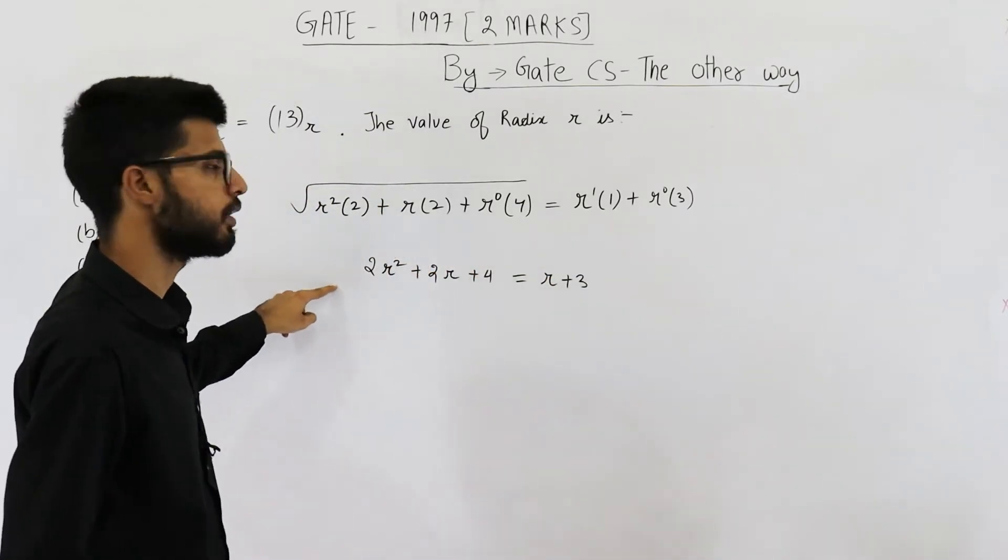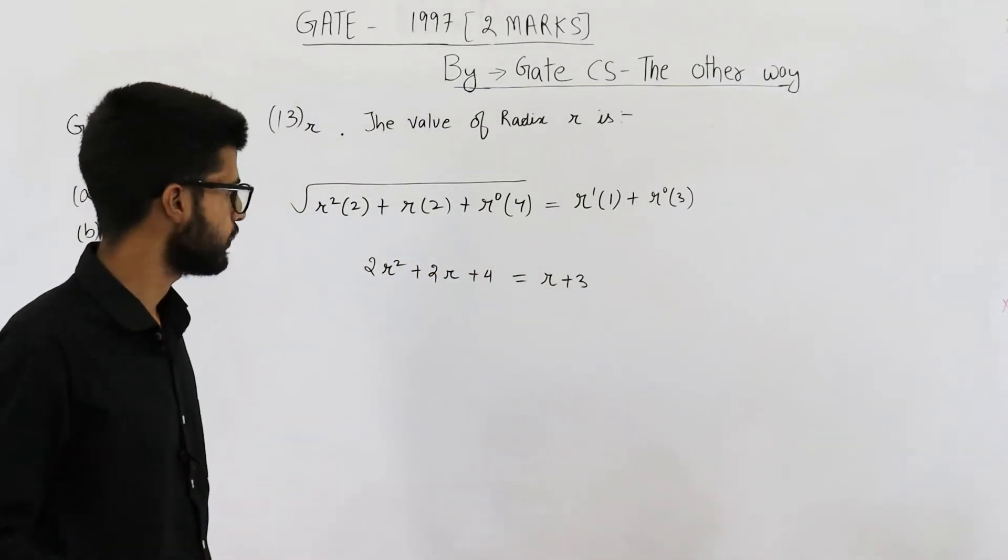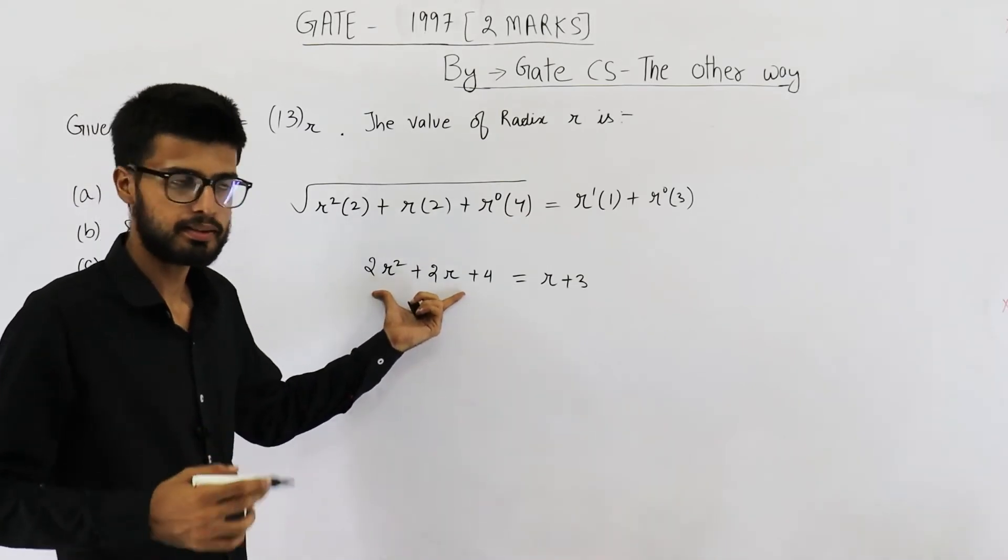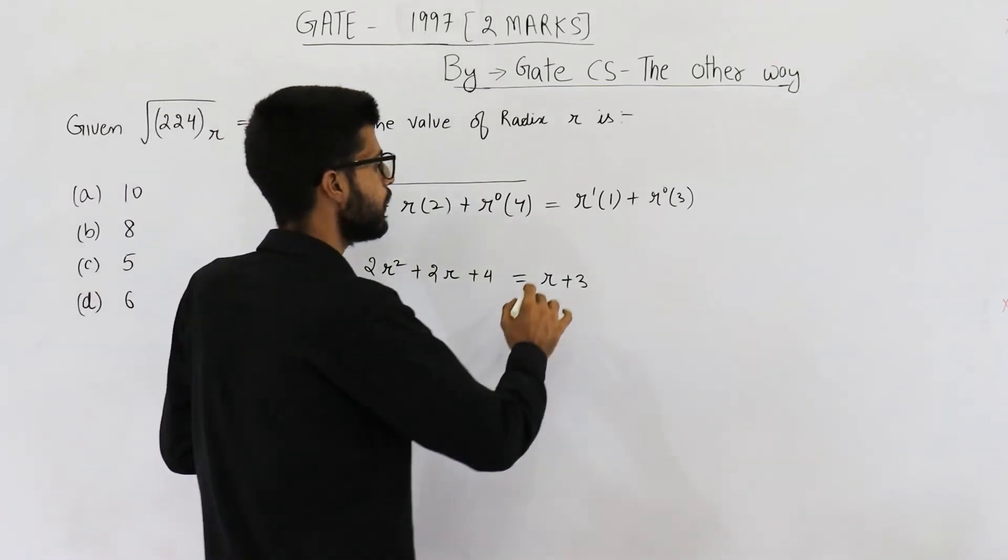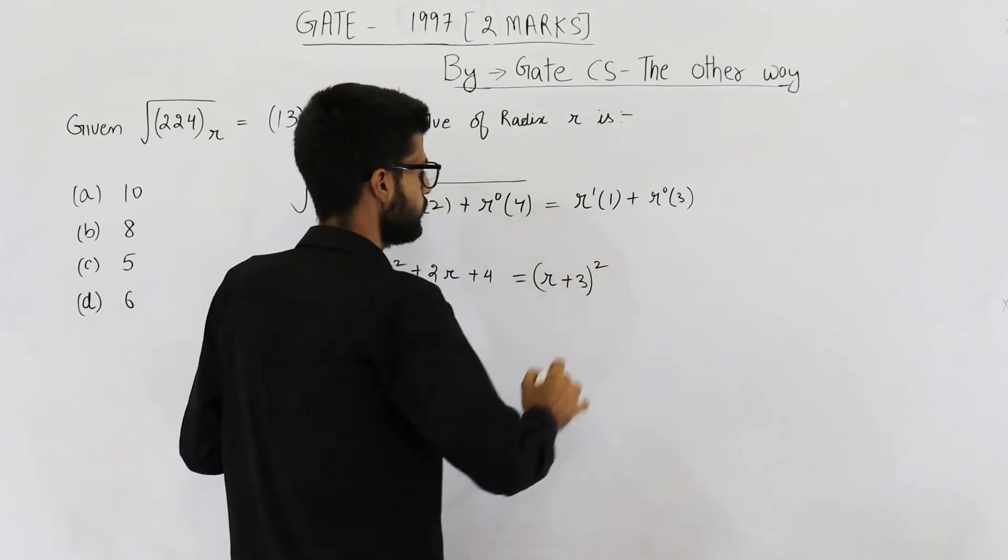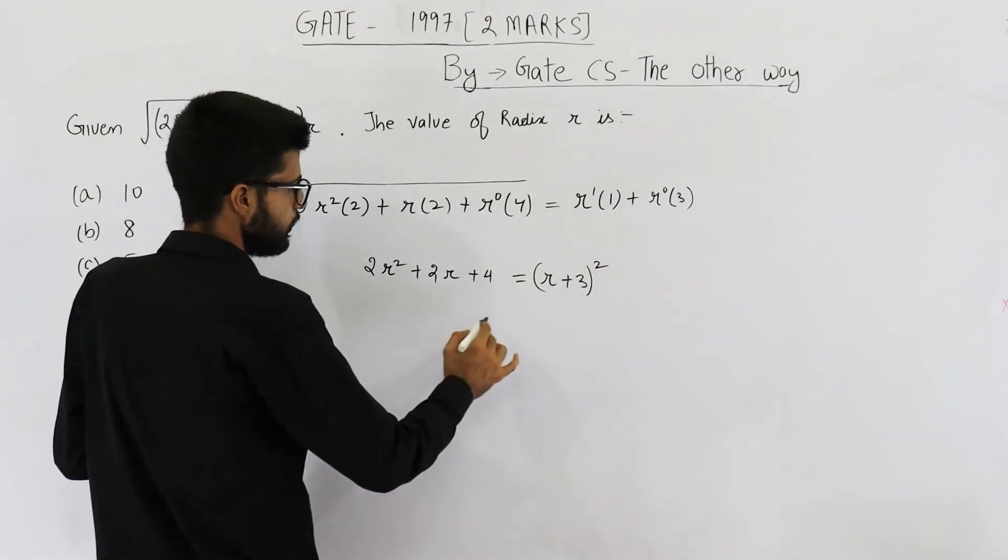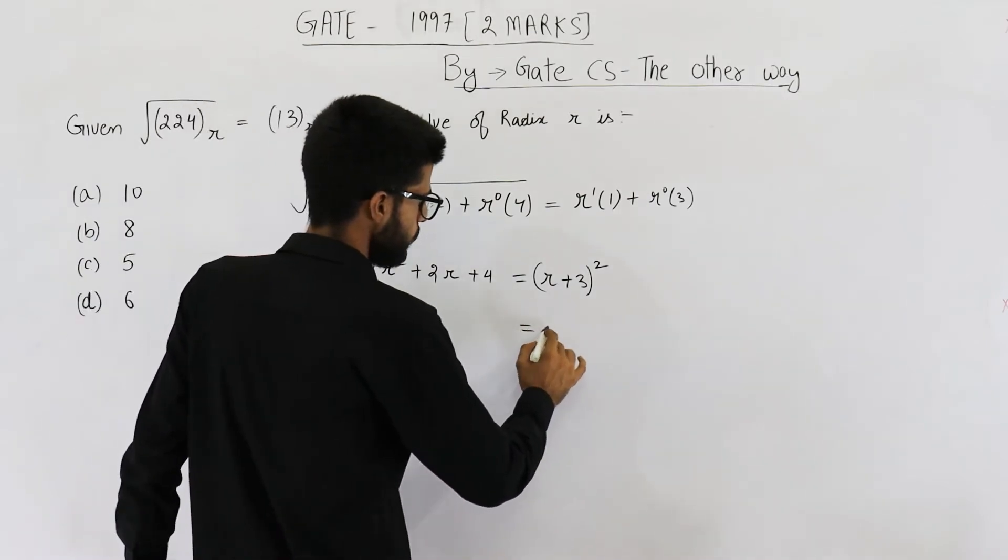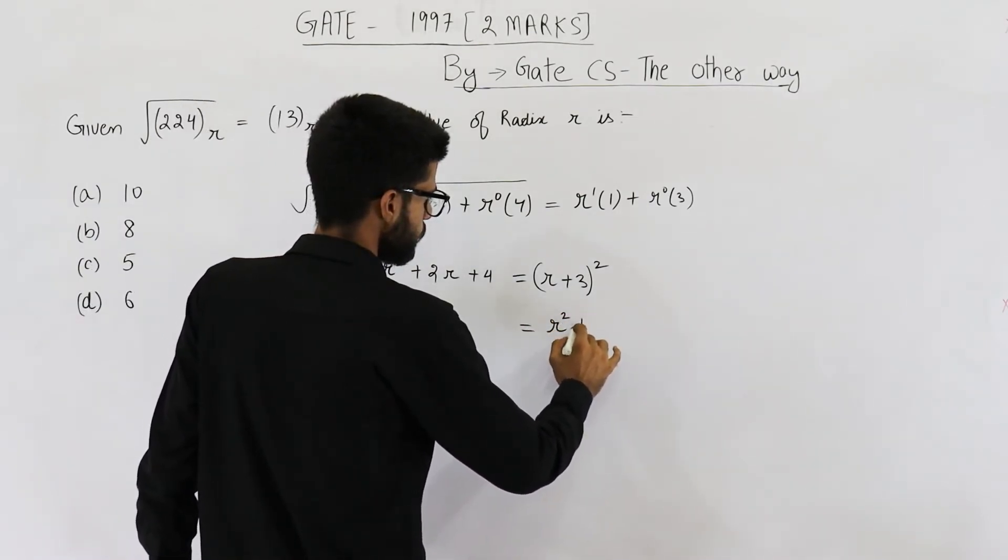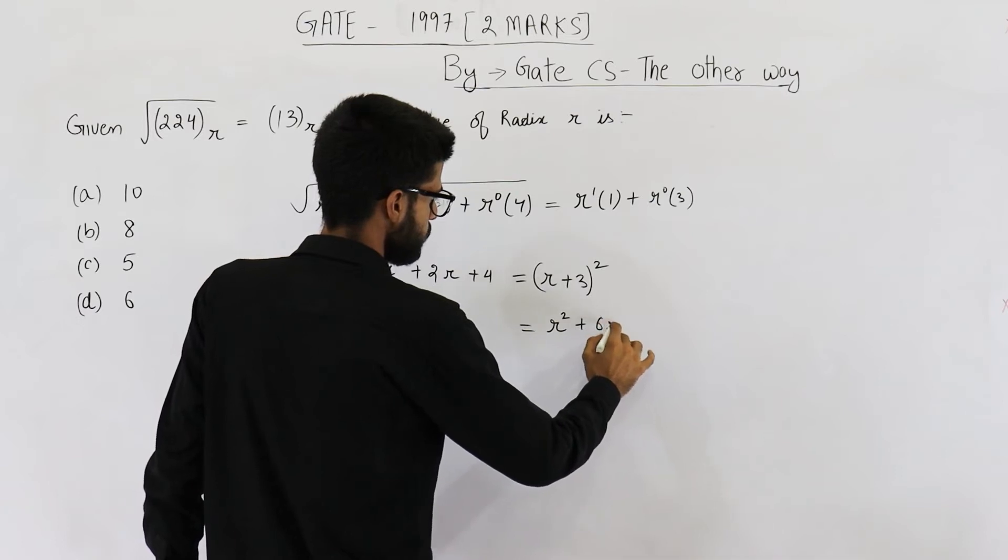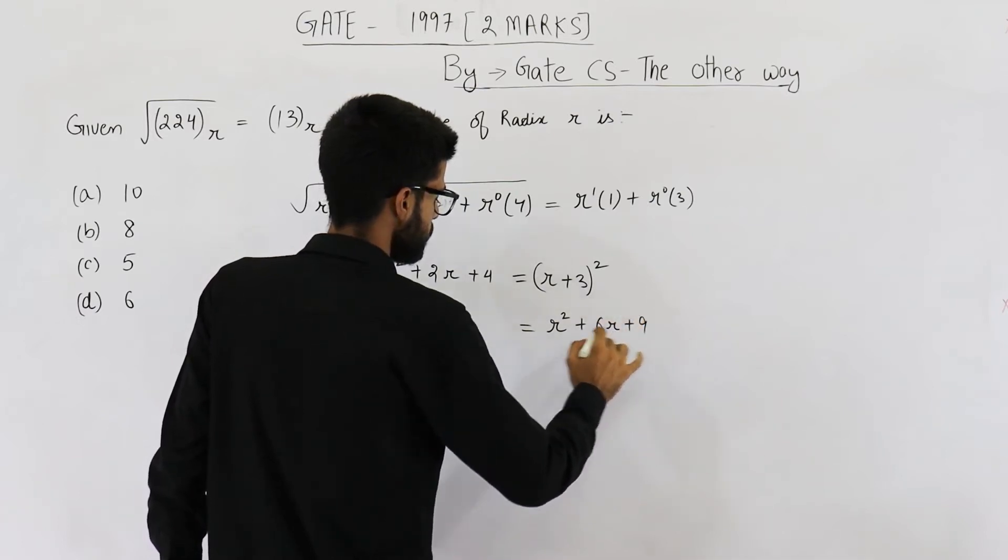Now we have a square root here. Just square both sides so this root will be cancelled with the square, and you can have a whole square here and you can have a whole square here. Let's solve it ahead. This will be equal to r square plus 6r plus 9.